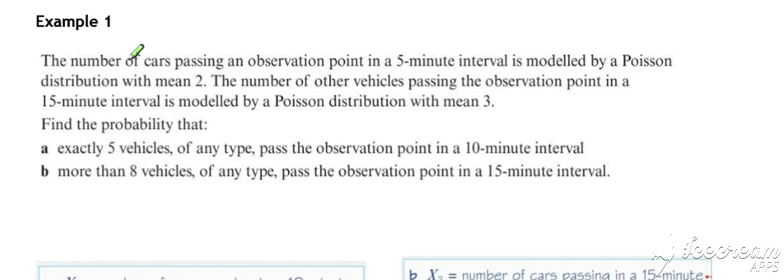So in example one, we've got cars passing an observation point, and we've got other vehicles passing the observation point. Cars have a lambda value of 2 for a 5-minute period, and other vehicles have a lambda value of, or an average value of 3 for a 15-minute interval. And we want to find the probability that exactly 5 vehicles of any type pass the observation point in a 10-minute interval. So just be careful here, we've got different time intervals here, the first thing we need to do is make sure we adjust everything so we're working to a 10-minute interval.